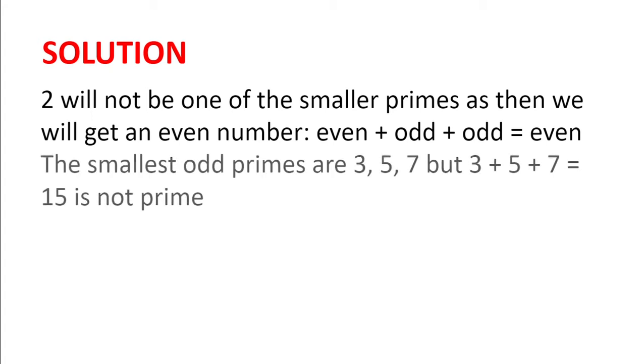So we look at the three smallest odd primes, which are 3, 5 and 7, but 3 plus 5 plus 7 makes 15, which is not prime.